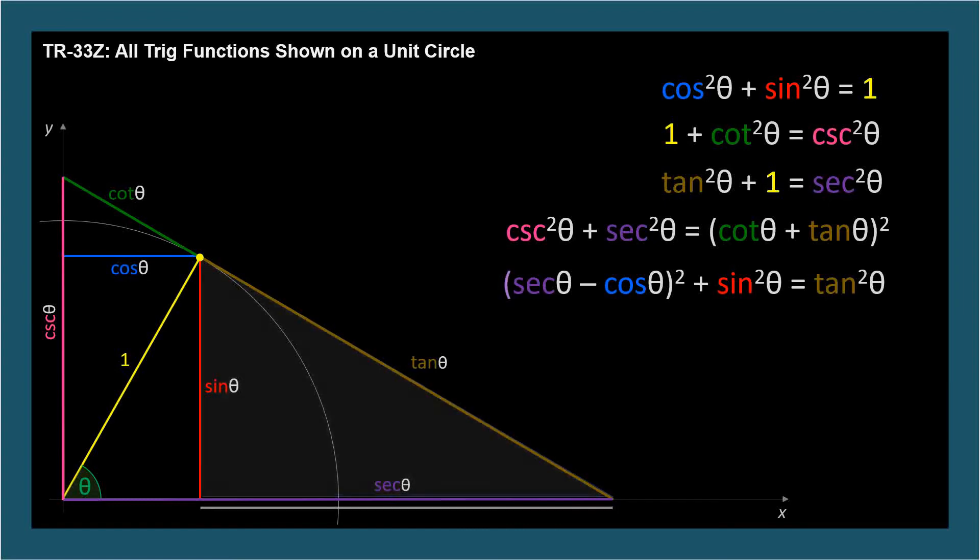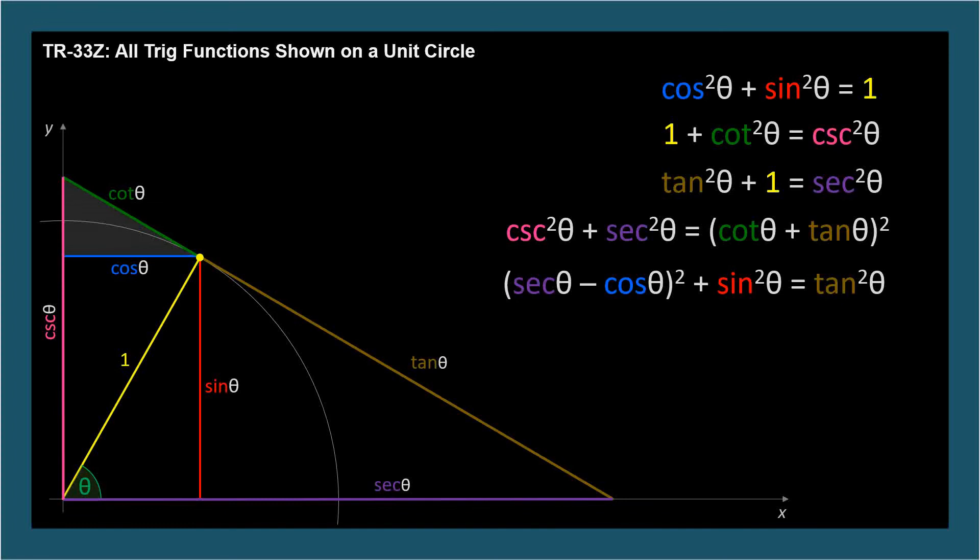And for this last triangle, the vertical distance is the pink cosecant minus the red line. So, cosecant theta minus sine theta quantity squared plus cosine squared theta equals cotangent squared theta.